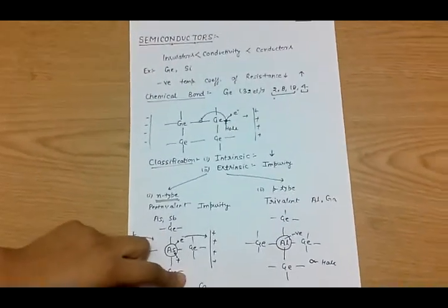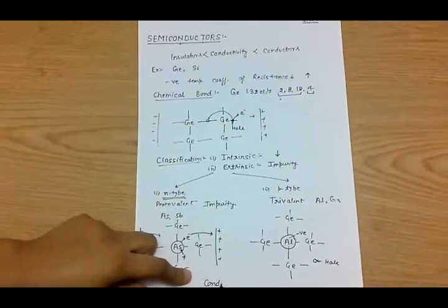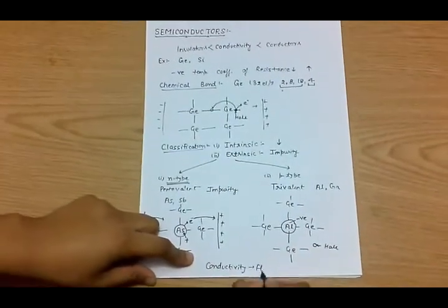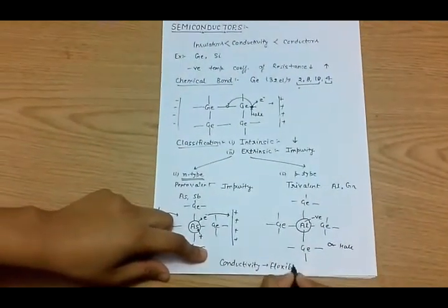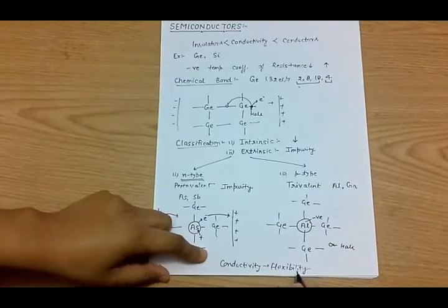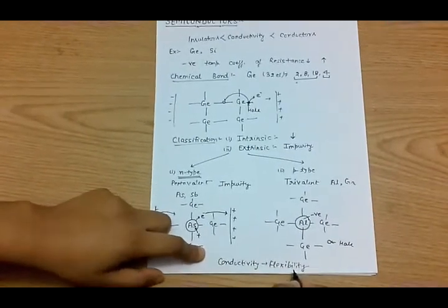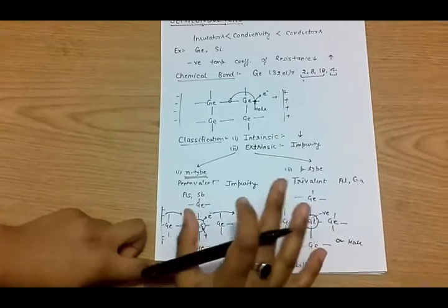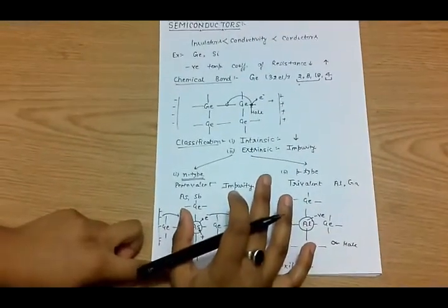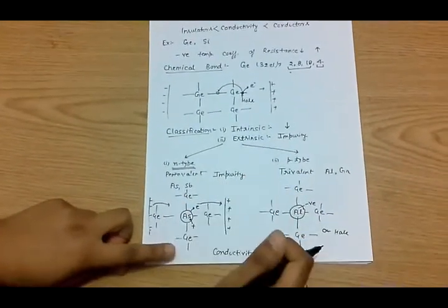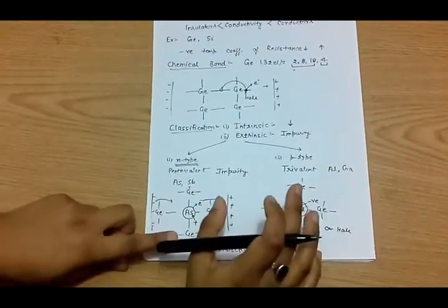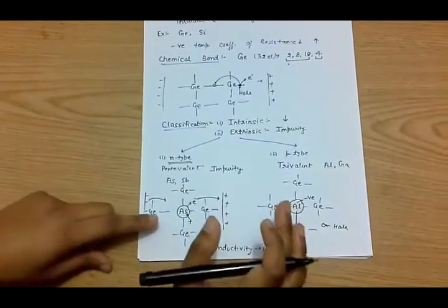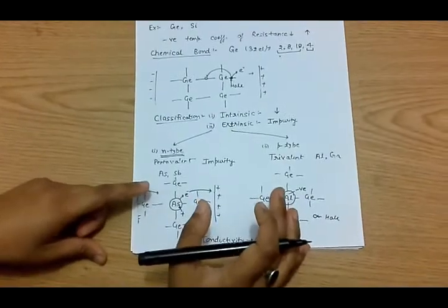Extrinsic semiconductor materials are of very great practical importance because their conductivity has flexibility — even a minute addition of impurity changes the conductivity to a very great extent. These materials are therefore studied further. I hope this video is helpful for you; if you like it, please like the video and subscribe. Thank you.